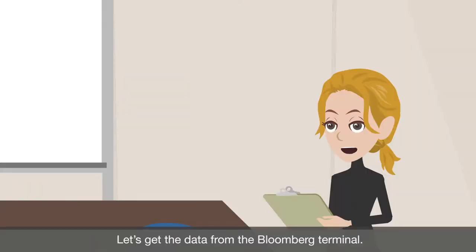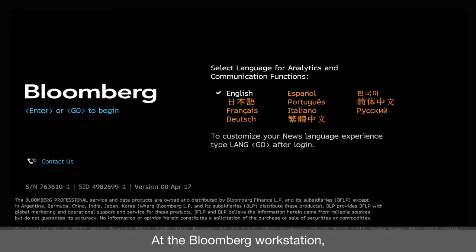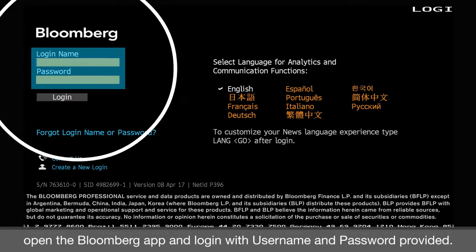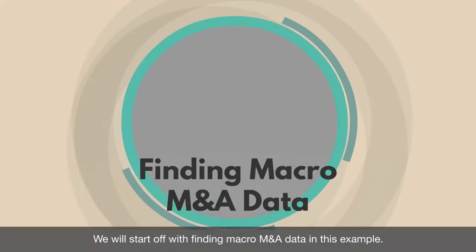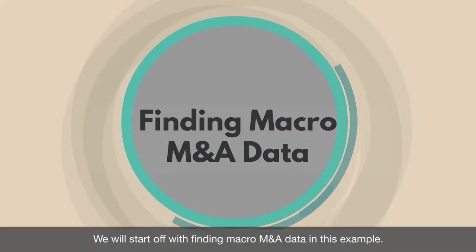That's easy. Let's get the data from the Bloomberg terminal. At the Bloomberg workstation, open the Bloomberg app and login with the username and password provided. We will start off with finding macro data in this example.